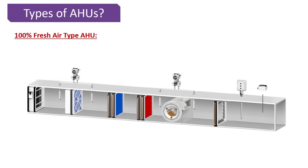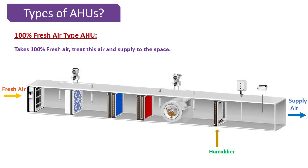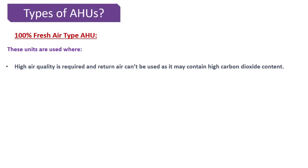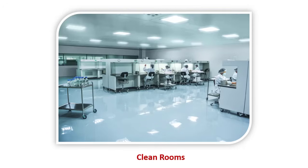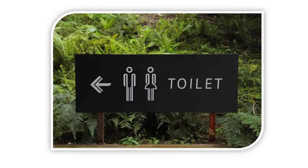Then we have the 100% fresh air type AHU. It takes 100% fresh air, treats it, and supplies it to the conditioned spaces. It consists of similar components: dampers (motorized or manual), filter, cooling coil, heating coil, fan, humidifier, temperature sensor, and a smoke detector. These units are used where high air quality is required and return air cannot be used due to high carbon dioxide content or airborne contaminants or infections.